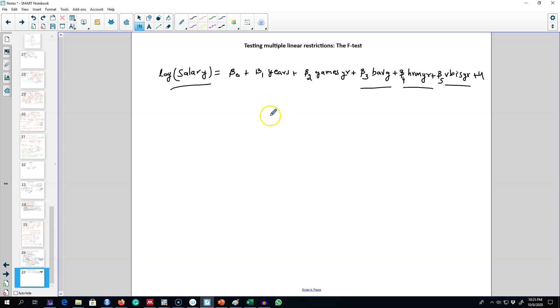This model is the log of salary of the players. Years is the number of years in the league, games here is the average games played per year, this is batting average, this variable represents home runs per year, and finally this final variable represents the runs batted in per year.